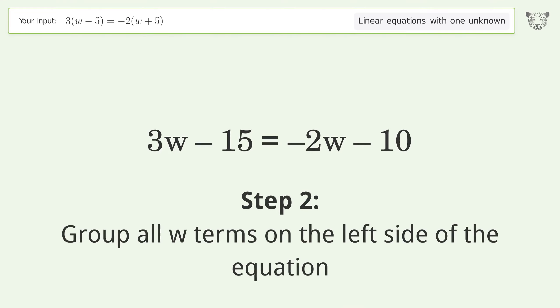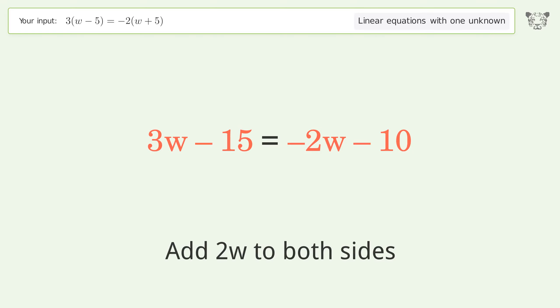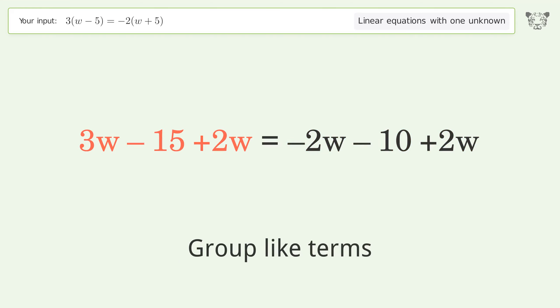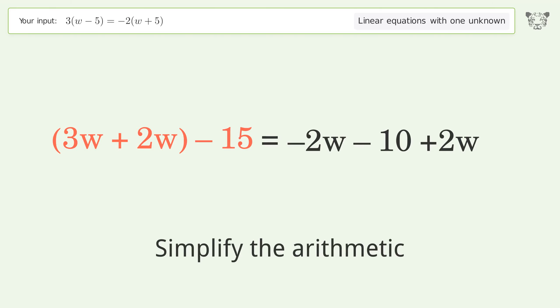Group all w terms on the left side of the equation. Add 2w to both sides, group like terms, and simplify the arithmetic.